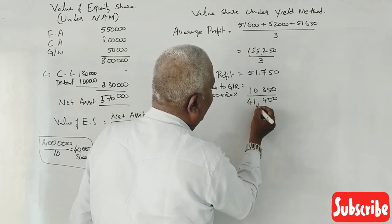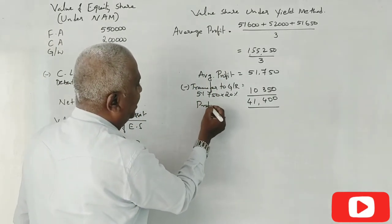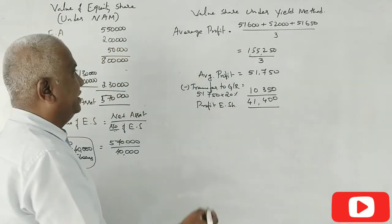Profit remaining is 41,400. This is profit for equity shareholders.